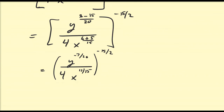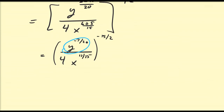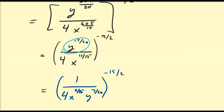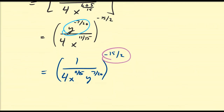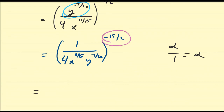Alright, so that gives y^(-7/20) over 4x^(11/15), all to the power of negative fifteen-halves. Notice that my y is now negative again, so I'm going to shift it to the bottom, giving one over 4x^(11/15) y^(7/20). Now I'm going to flip this whole thing upside down to make the outer exponent positive. Since it's one over something, once I reciprocate it becomes 4x^(11/15) times y^(7/20), all to the power of fifteen-halves.